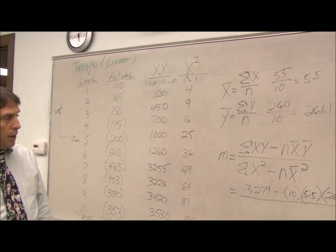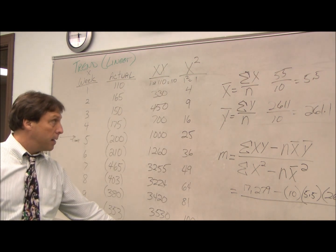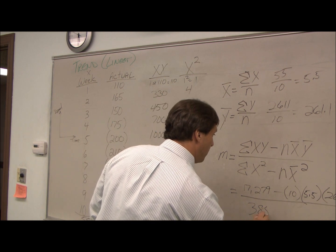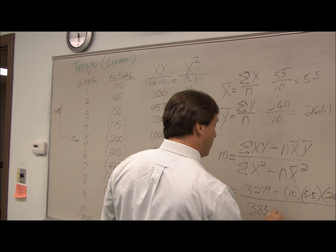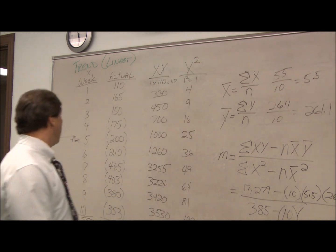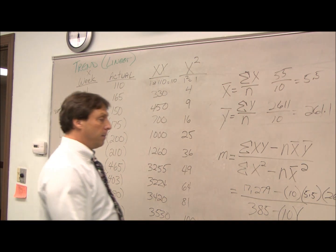All right. So that's our numerator. In our denominator, we take the sums of our x-squared, which is 385, and we subtract from that our n times our x-bar squared, so 5.5 squared.